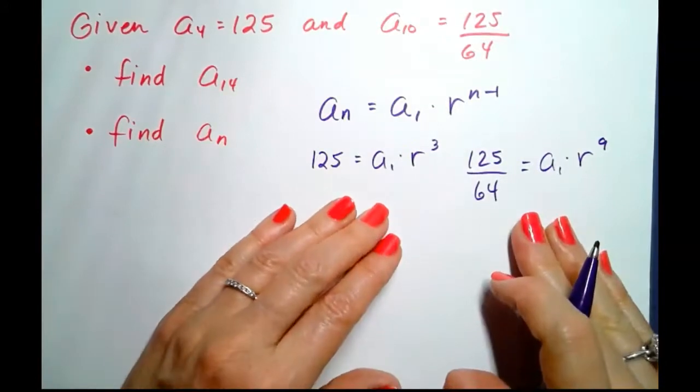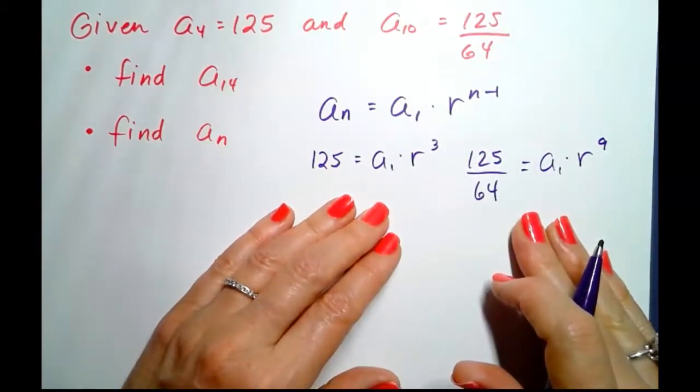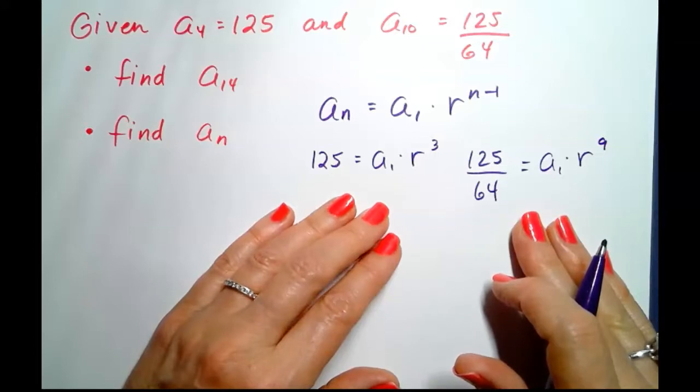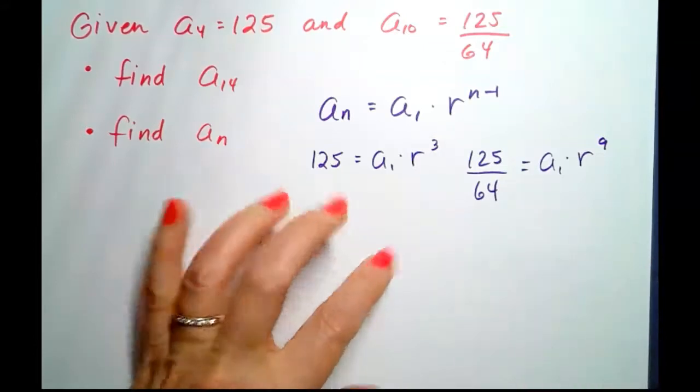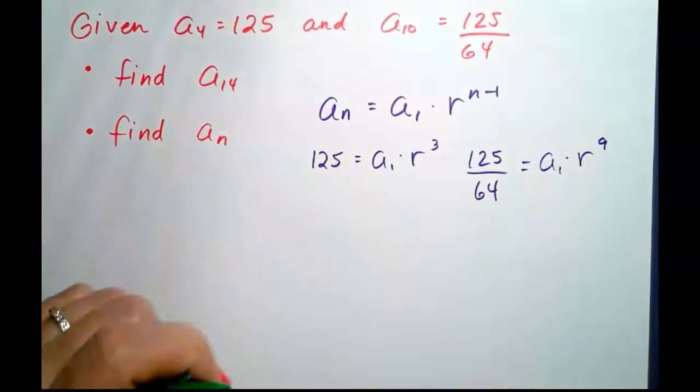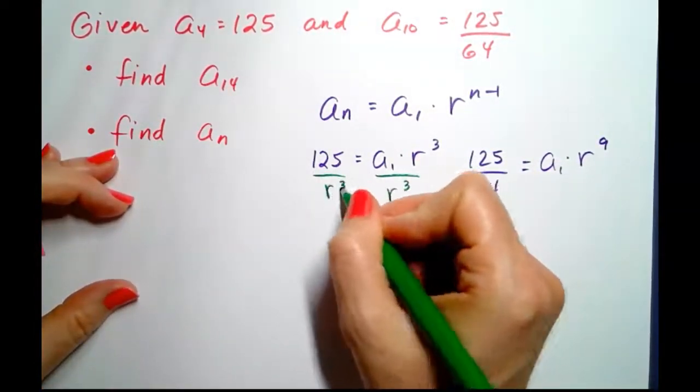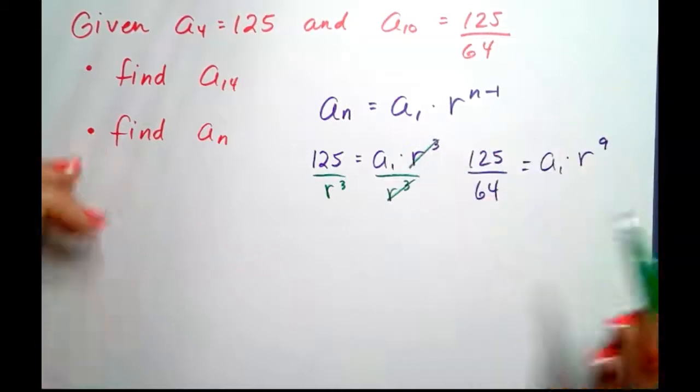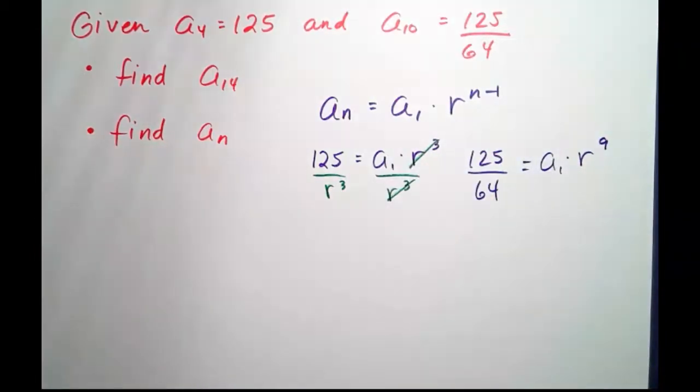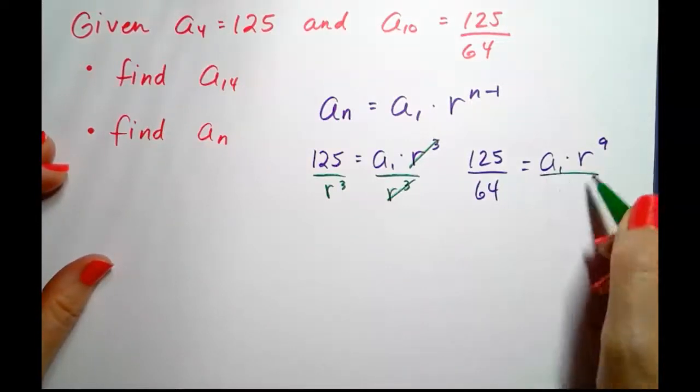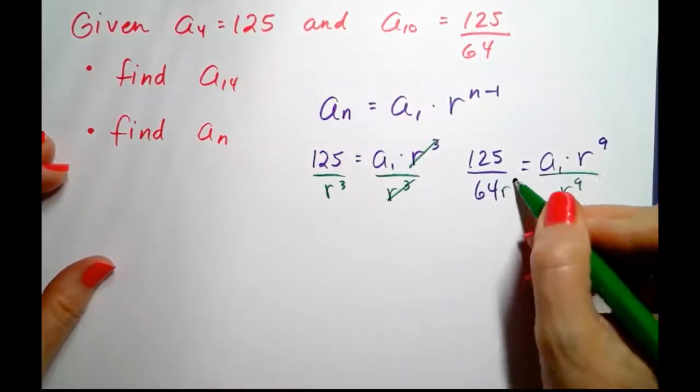So here are my two equations. Let's start by solving them both for a sub 1. To solve the first one for a sub 1, we just need to divide both sides by r to the third. So a sub 1 equals 125 over r cubed. Let's do the same thing on the other side, dividing both sides by r to the ninth.